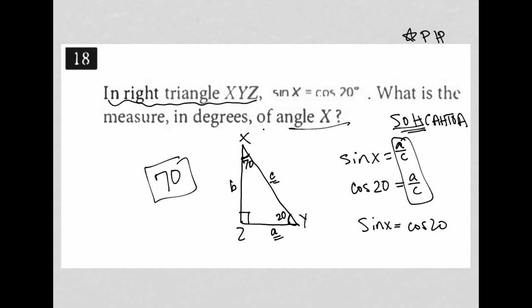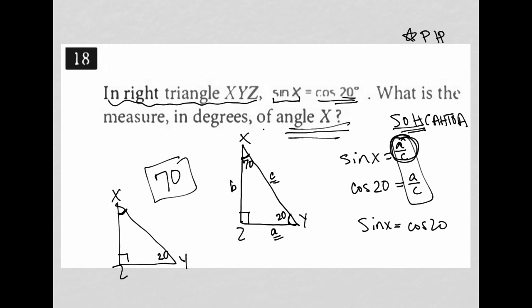I kind of stumbled into that answer — they're calling this 'sine X,' meaning we don't know the angle; they're asking for angle X. When I draw the right triangle with Z as 90°, I don't know X yet. I'm given cosine of 20, so I place 20 degrees at Y. I confirmed that sine of X gives the same ratio as cosine of 20 with 20 degrees at Y, so angle X is confirmed to be 70 degrees.